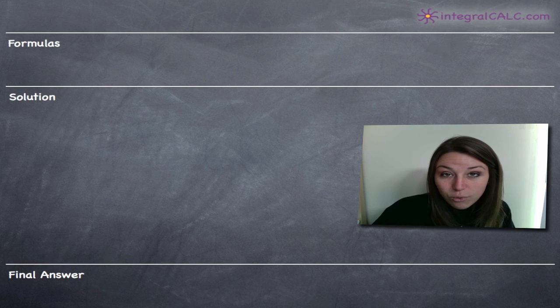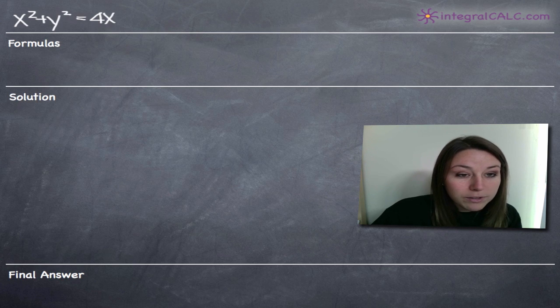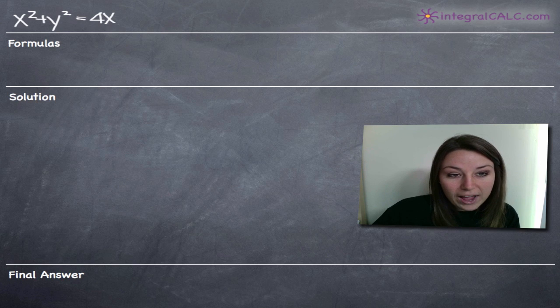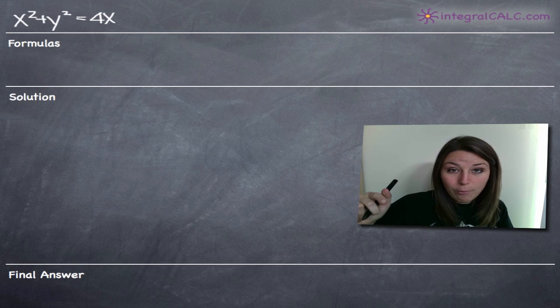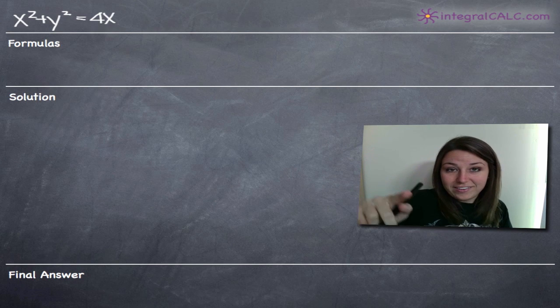Today we're going to be talking about how to sketch the equation of a circle. The circle that we're given is x squared plus y squared minus 4x. Keep in mind that in order to sketch a circle, we only really need two pieces of information: the center point of the circle and the radius. If we have the center point and we know how big the radius is, we can sketch the whole circle.